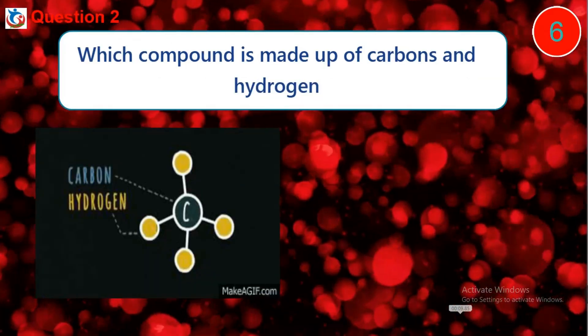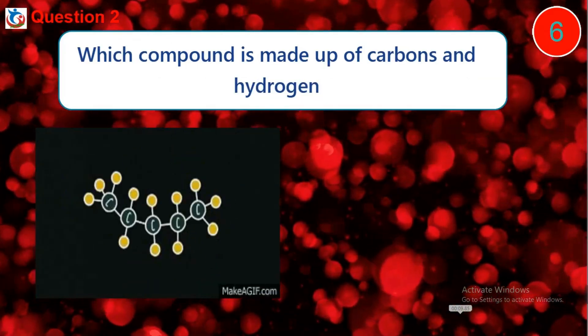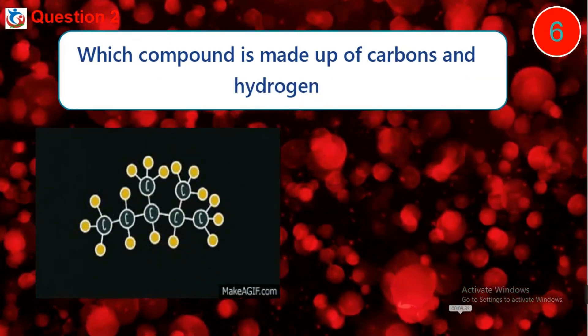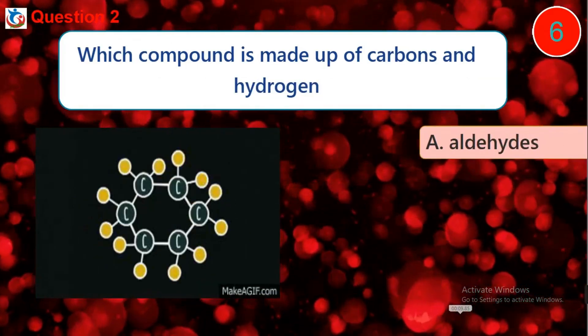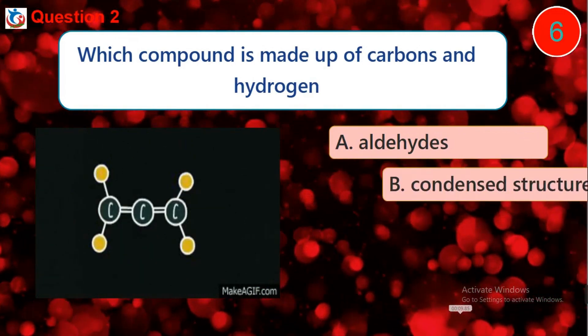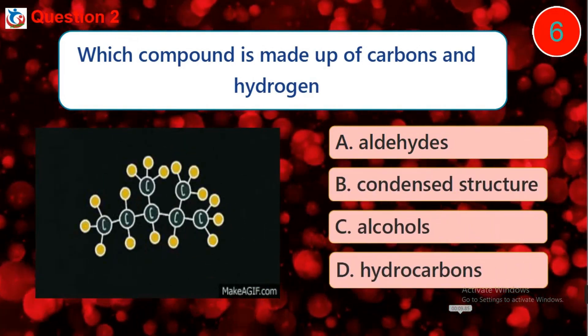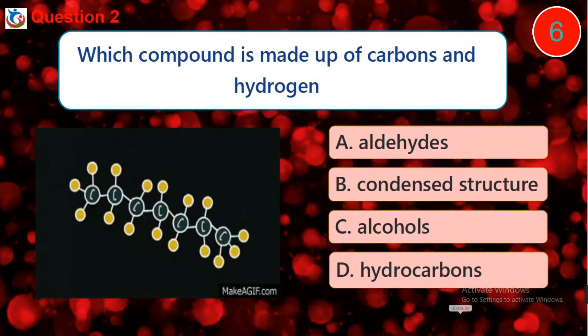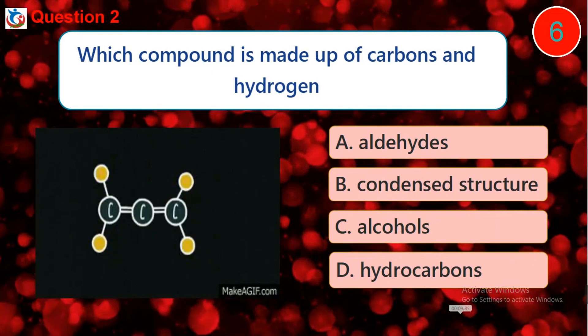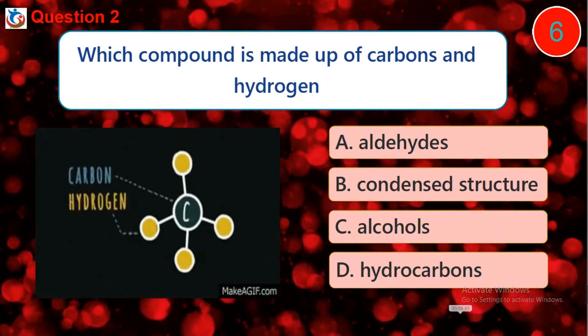Question 2. Which compound is made up of carbons and hydrogens only? A. Hydrohide. B. Condensed structure. C. Hydrocohorts. D. Hydrocarbons.